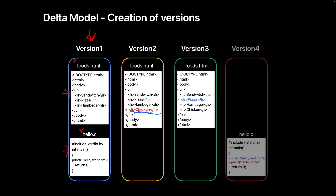We modify the foos file again by removing the text 'picture'. Version 3 only records the deletion. Similarly, hello.c remains unchanged, so no content is saved for it. Finally, in hello.c, the text 'hello world' was changed to 'hello git'. Version 4 records only the modified line. Since the foos file was not changed, nothing related to it is recorded.